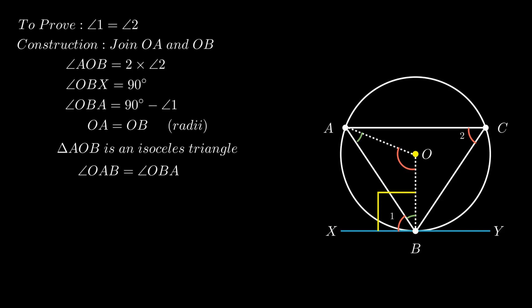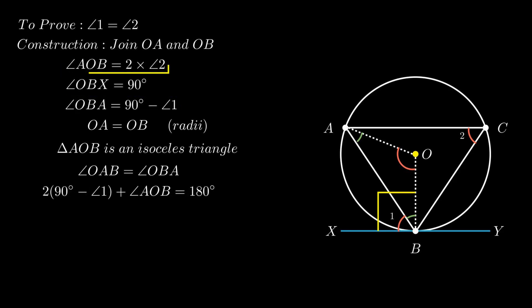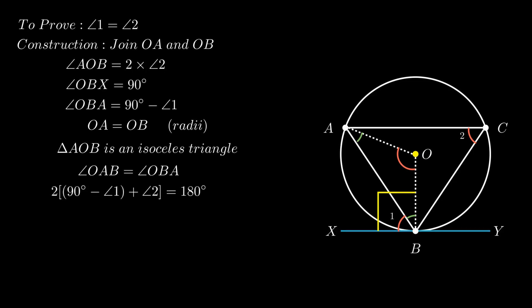Now by using the angle sum property in triangle AOB, we get angle OAB plus angle OBA plus angle AOB equals 180 degrees. Since angle OAB equals angle OBA, this equation can be represented as twice of angle OBA plus angle AOB equals 180 degrees. Putting the values of angle OBA and angle AOB into this equation and taking 2 as a common factor, this reduces to twice of (90 minus angle 1) plus angle AOB equals 180 degrees.